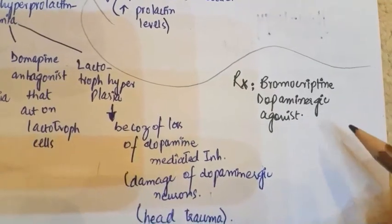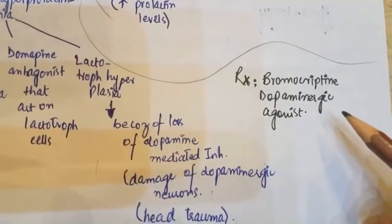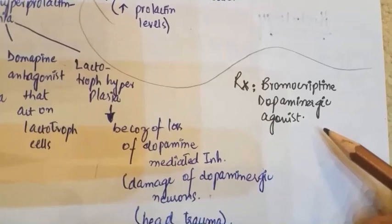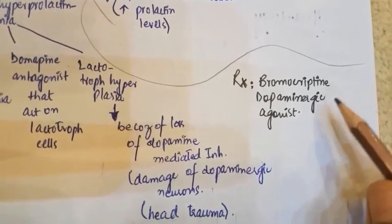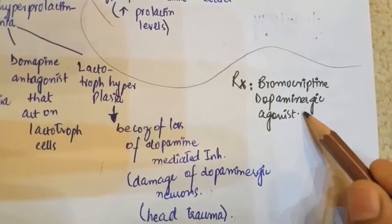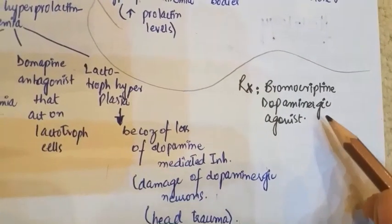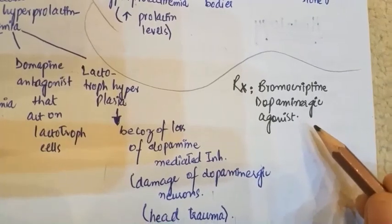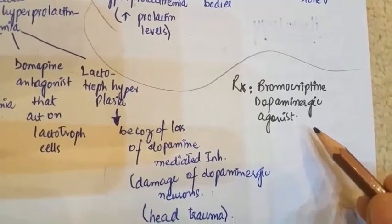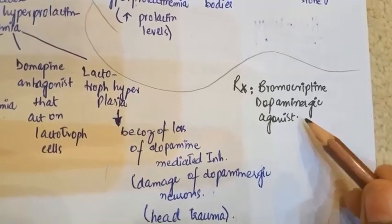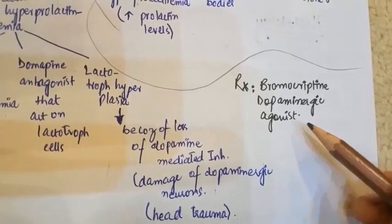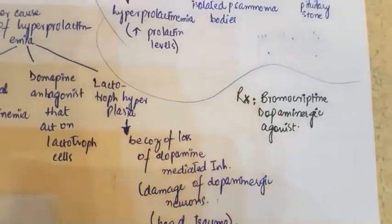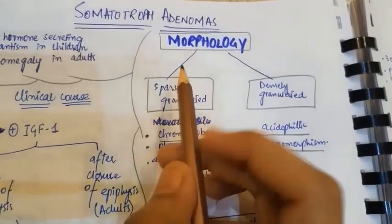For treatment, we can give bromocriptine, a dopaminergic agonist. This dopaminergic agonist will inhibit the lactotroph cells because it has an inhibitory effect on them.